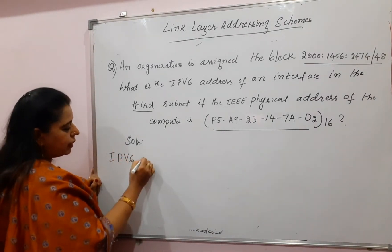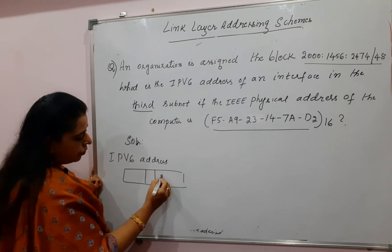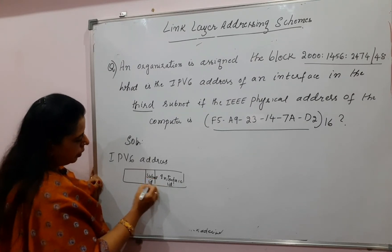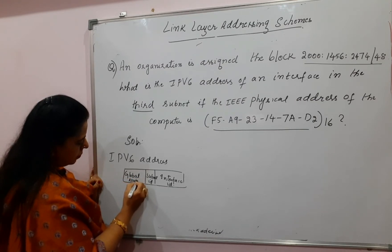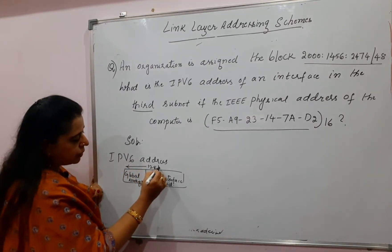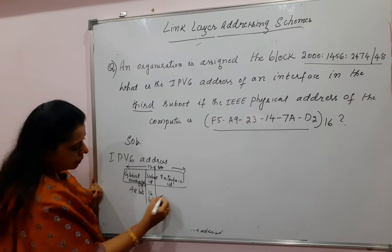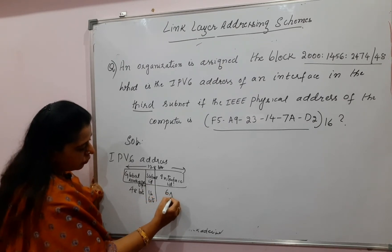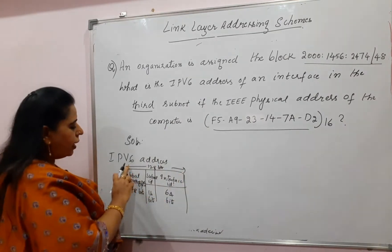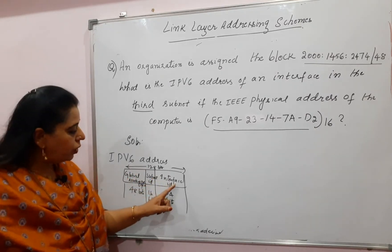IPv6 addresses consist of three parts: global routing prefix, subnet identifier, and interface ID. This is totally 128 bits. The global routing prefix is 48 bits, the subnet ID is 16 bits, and the interface ID is 64 bits — 48+16+64 = 128. From this question, you need to arrive at the 128-bit IPv6 address, so you require the global routing prefix, the subnet ID value, and the interface ID.